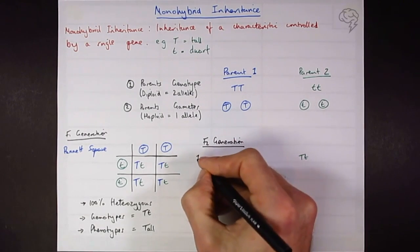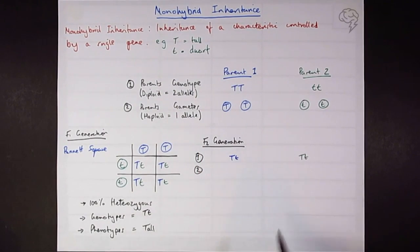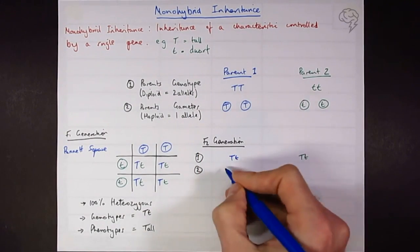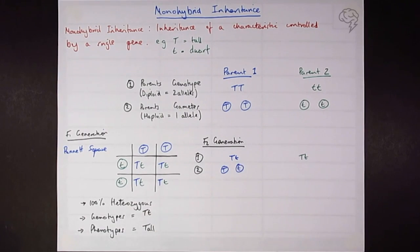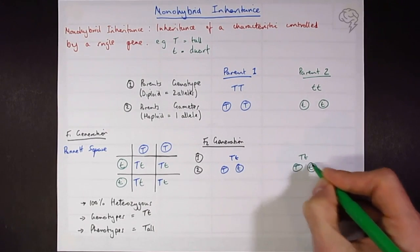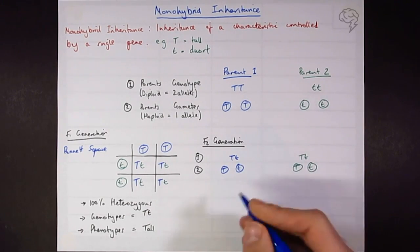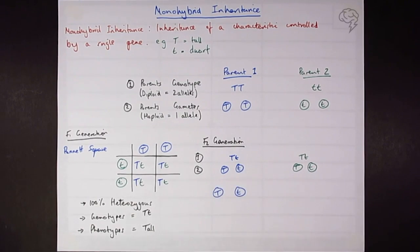So again, my number one is my parent's genotype. And my number two here is the parent's gamete. So we're now going to split these. So we're going to have one big T allele and one little T allele from this parent, and we'll have the same over here. And I'm going to lay it out in exactly the same way. So I have my blue across the top, and my parent two down the side.